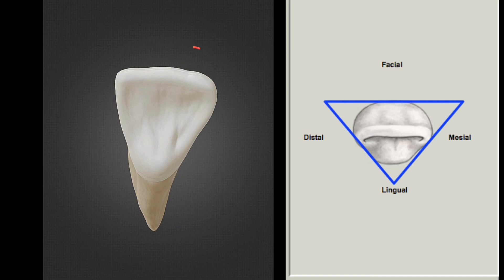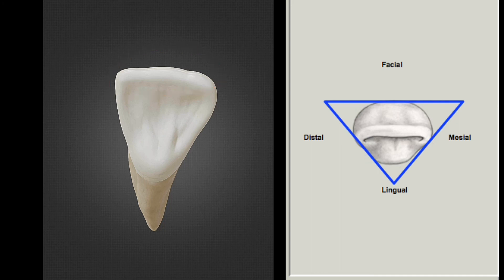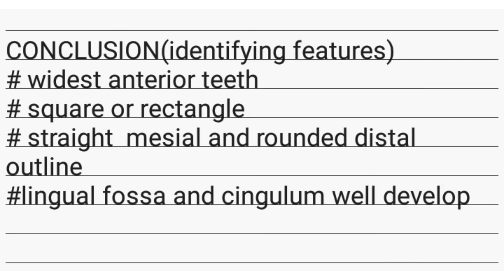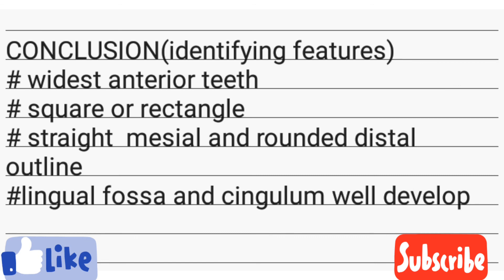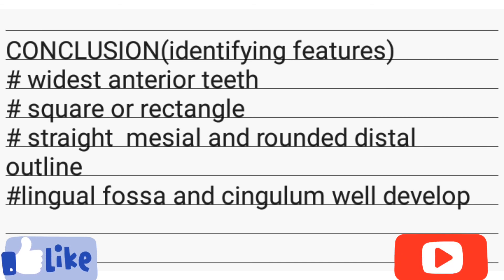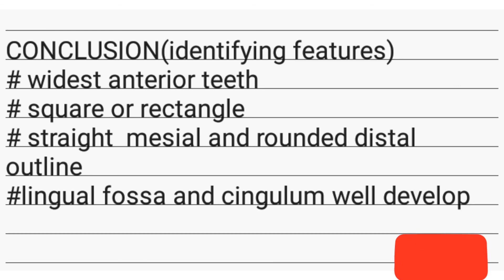For the incisal aspect, the root center is straight and the mesio-distal width is greater than the facial-lingual width. It has prominent mesio-labial and disto-labial line angles. In conclusion, this is the widest anterior tooth; the shape is square or rectangular, it has a straight mesial outline while the distal outline is rounded, and the lingual fossa and cingulum are well developed.